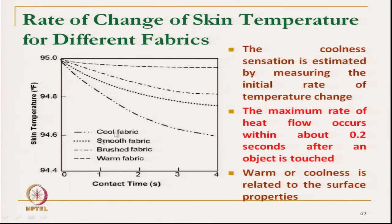Among the smooth and brushed fabrics, made of the same material and construction, the smooth fabric shows a higher skin temperature drop than the brushed fabric because the smooth fabric has a higher contact area. The maximum rate of heat flow occurs within 0.2 seconds after an object is touched. Warm or coolness is therefore related to the subject's surface property: if we change the surface, the warm-cool sensation changes.